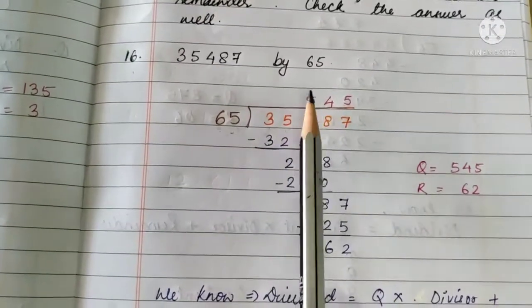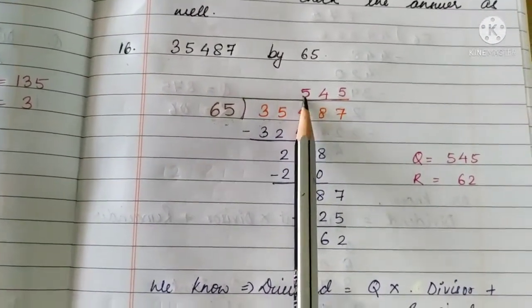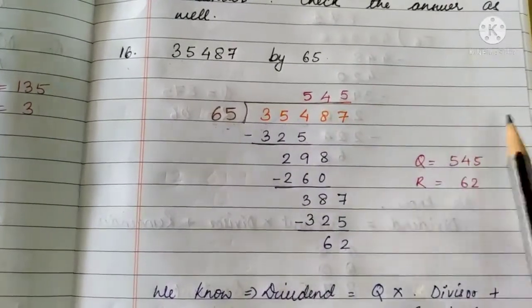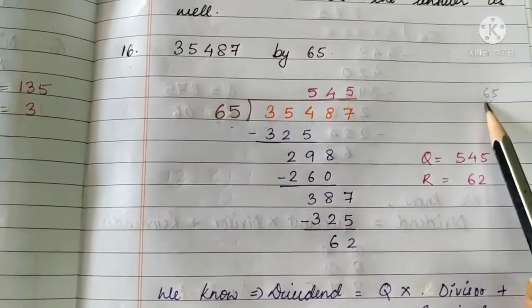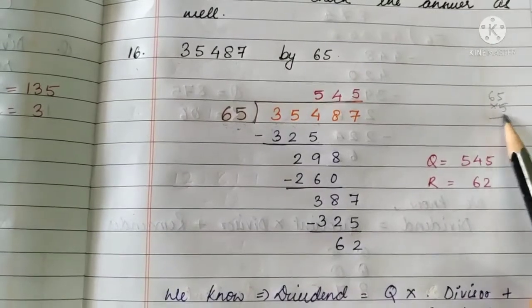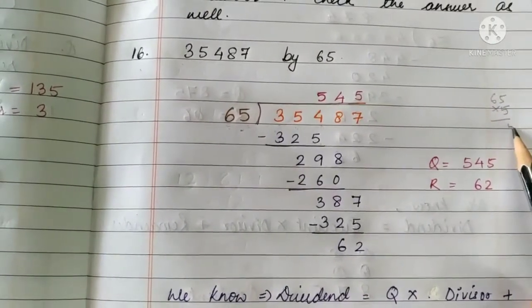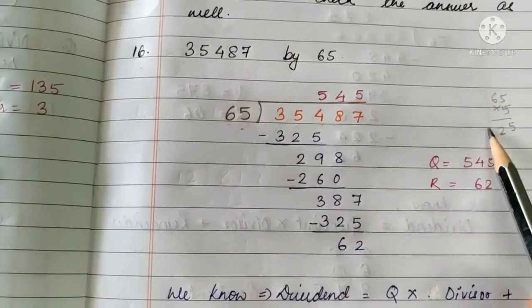So, similarly, we can take that number as our hint. And we can try and find out how much is 65 multiplied by 5. So, what is the answer? The answer is 325.